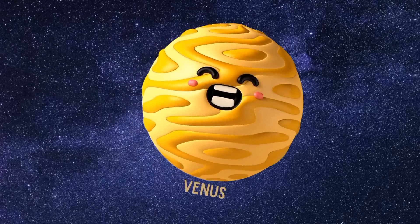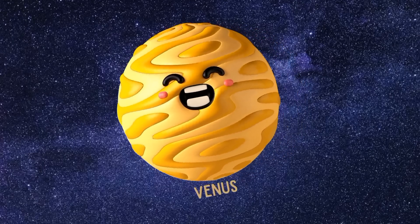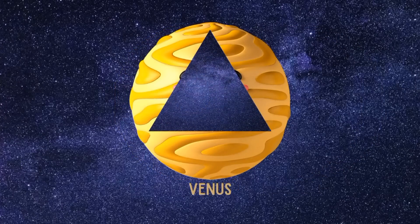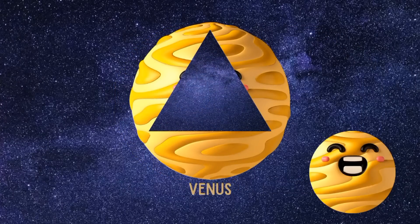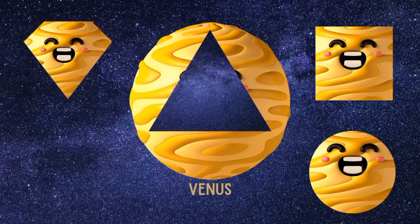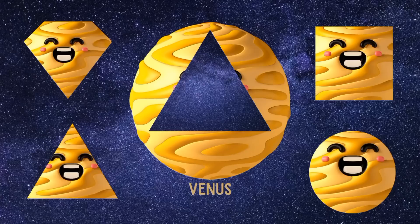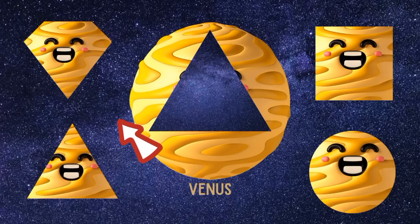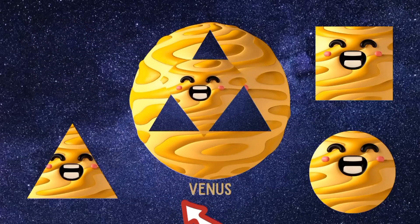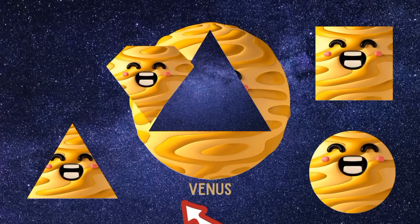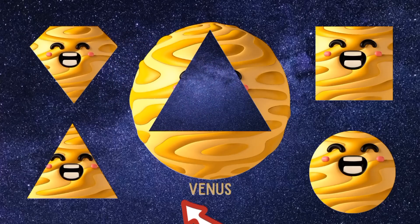Venus. Circle. Diamond. Square. Triangle. What is here? Diamond. Square.